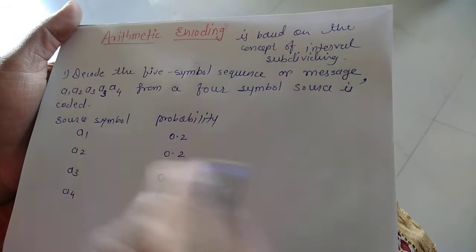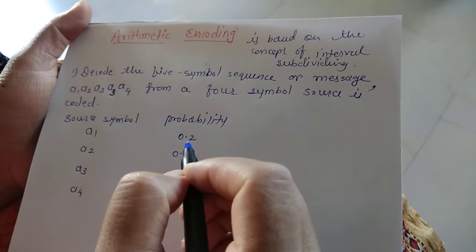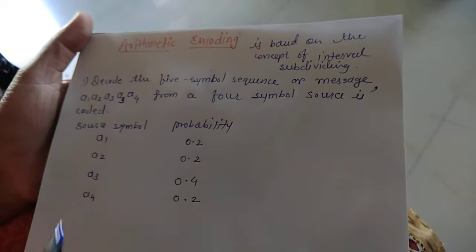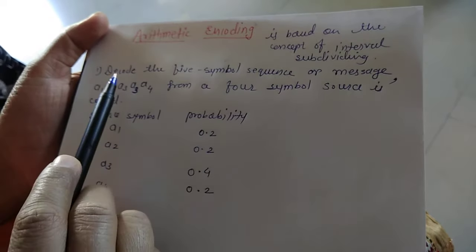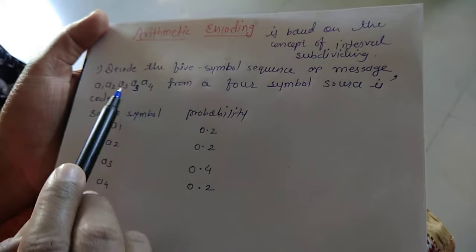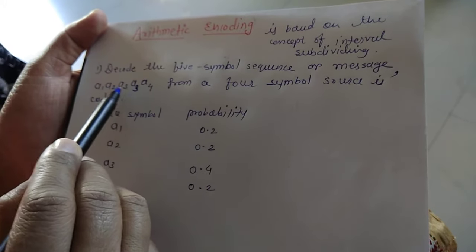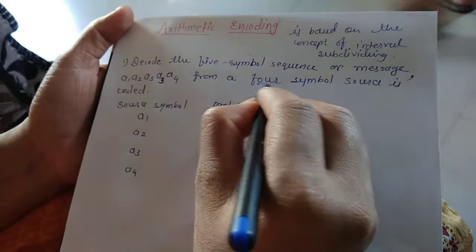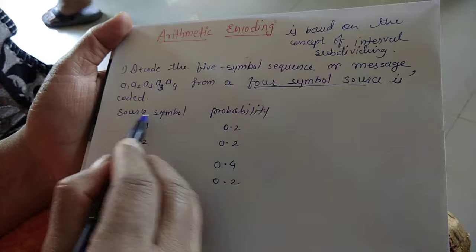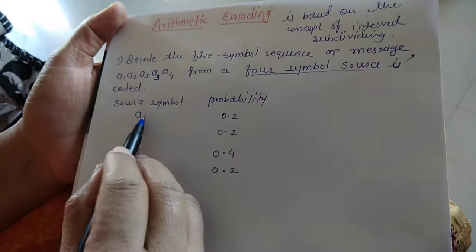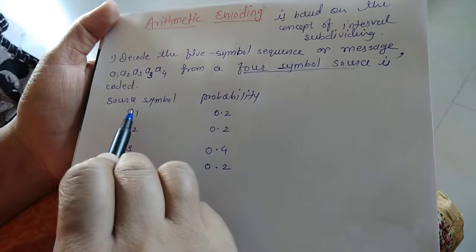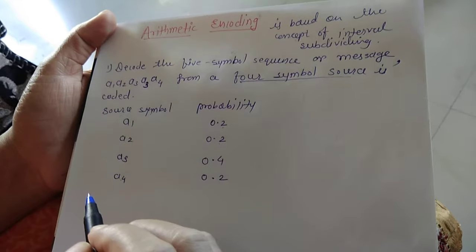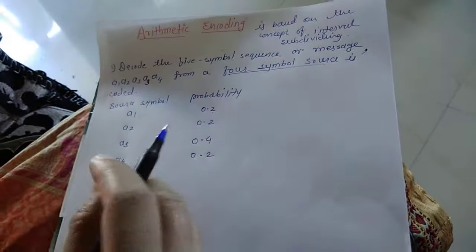Hello everyone. In this video we'll see the arithmetic encoding process. This arithmetic encoding is based on the concept of interval subdividing. The first numerical problem given is: decode the five symbol sequence or message a1, a2, a3, a3, a4 from a four symbol source. The four source symbols are a1, a2, a3, a4 with probabilities of occurrence 0.2, 0.2, 0.4, and 0.2 respectively.